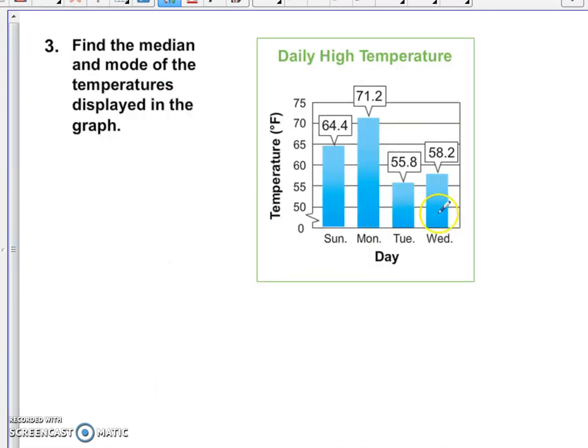Let's go to the next example. Find the median and mode of the temperatures displayed in the graph. So these are the four numbers we have. They're decimals this time. The smallest number is 55 and 8 tenths. Then we have 58 and 2 tenths. Then we have 64 and 4 tenths and 71 and 2 tenths.